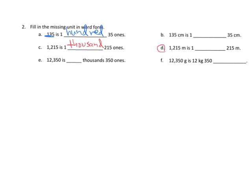Similarly, D would be 1 meter and then 215 meters. And let's just do one last example on this slide. Let's do 2,350 grams. Well, that's equal to 2 kilograms and 350 grams.